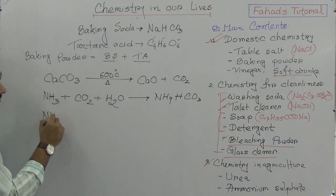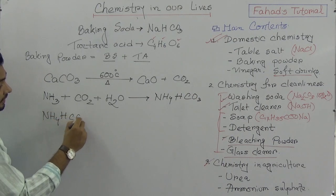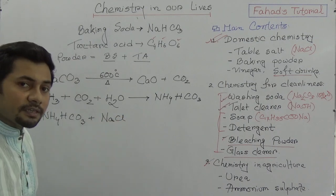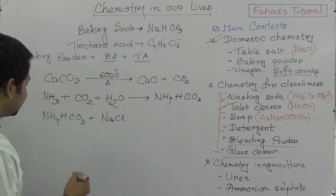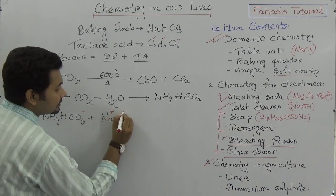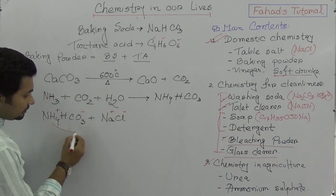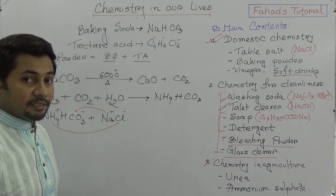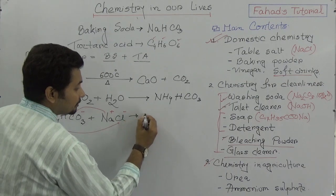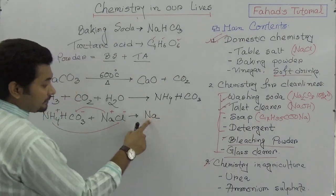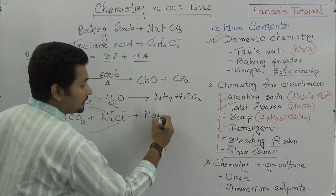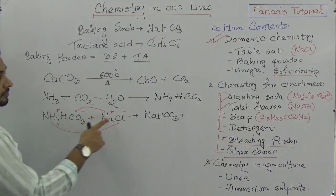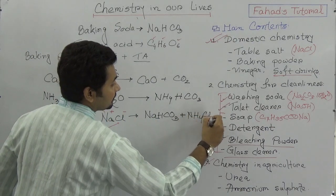Now think about this: ammonium hydrogen carbonate is reacting with sodium chloride. Ammonium will combine with chlorine and sodium will come together with the bicarbonate radical, and they will produce sodium bicarbonate (NaHCO₃) plus ammonium chloride.